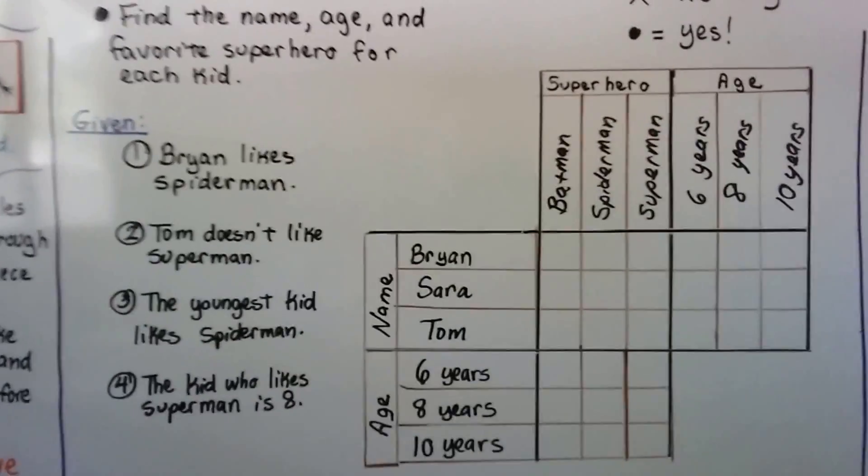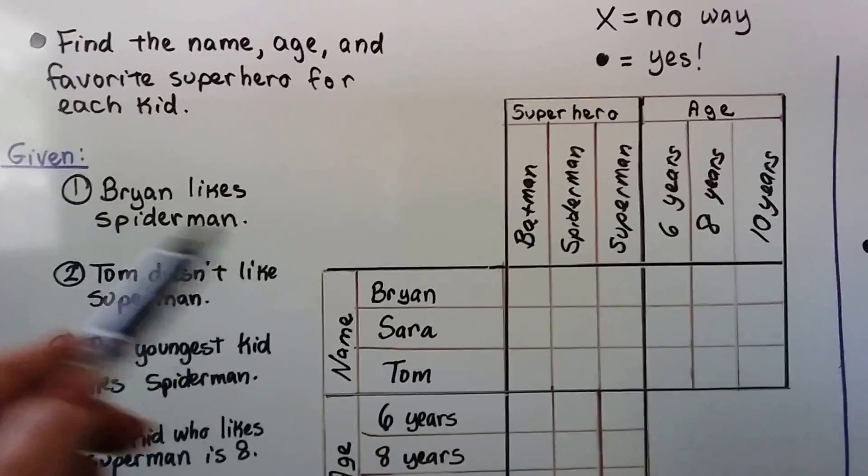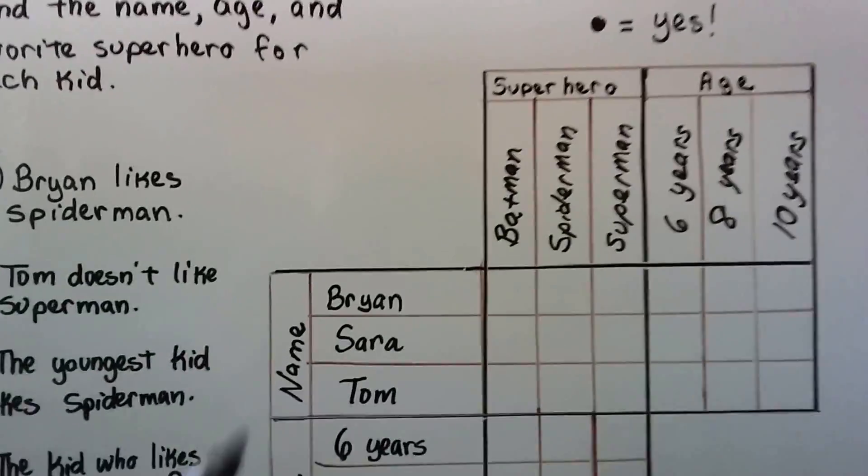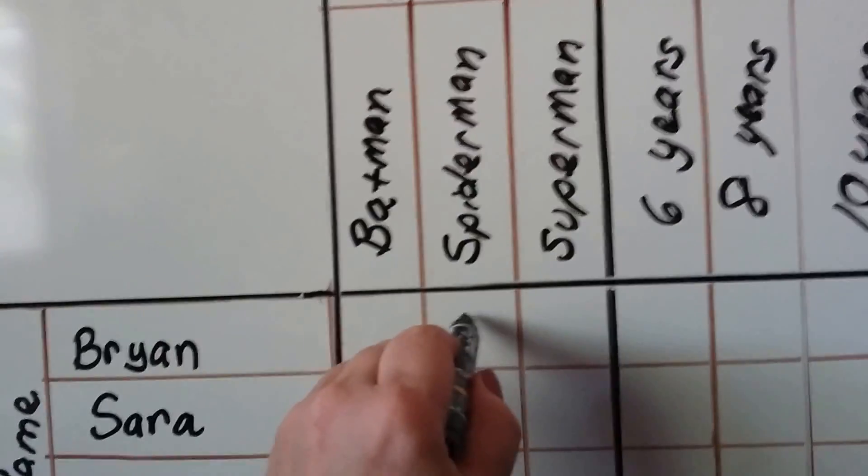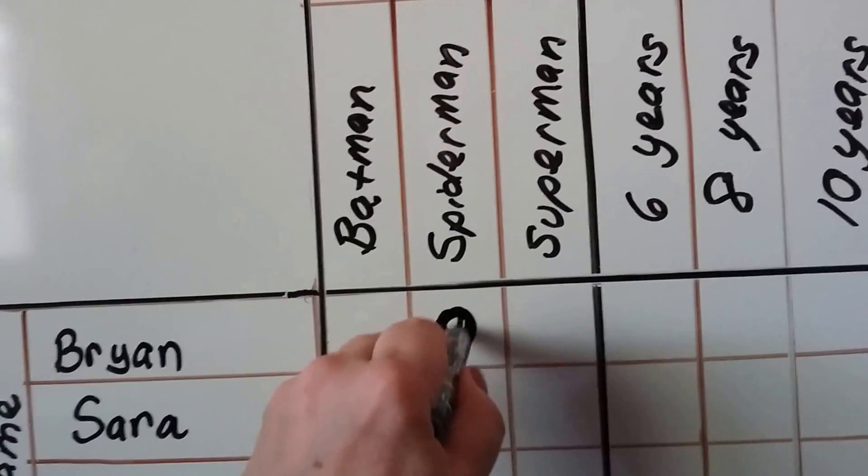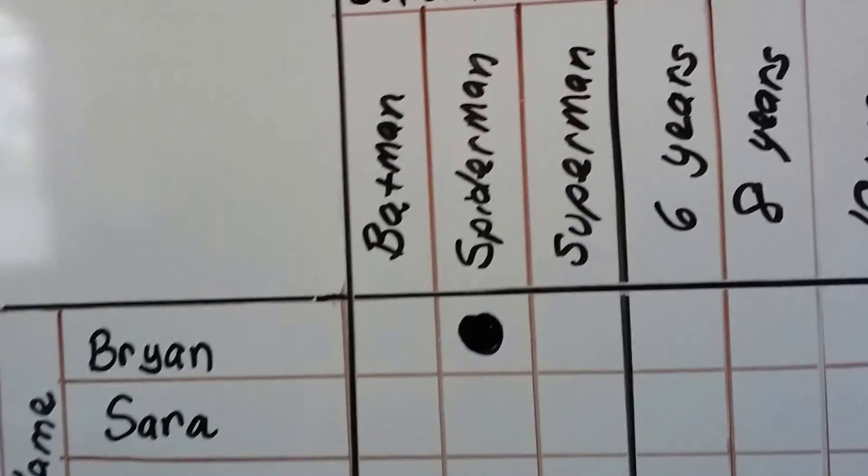Brian likes Spider-Man. That's given, that's a yes. So we look for Brian, we look for Spider-Man, and where the two pieces of information intersect, we're going to put a dot because it's telling us that he likes Spider-Man.